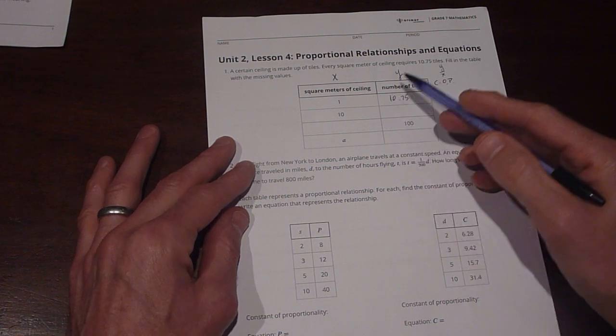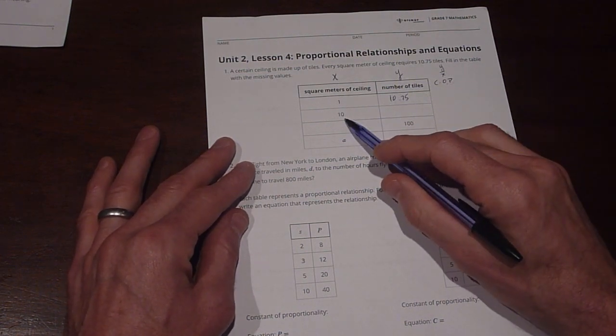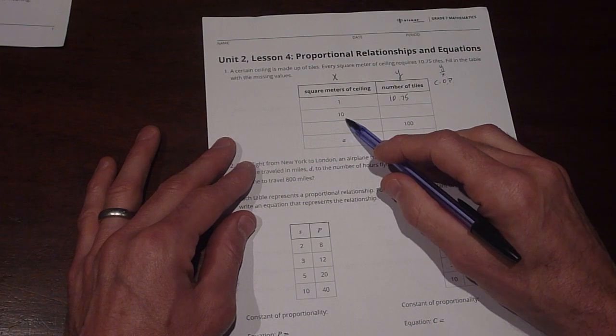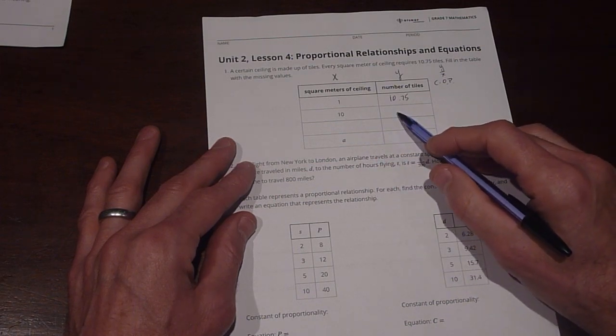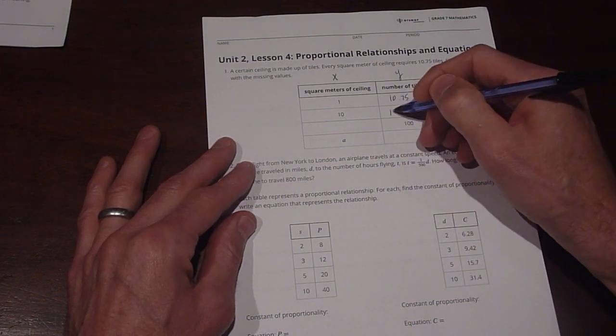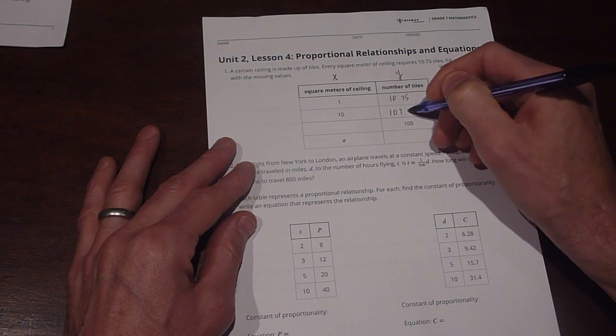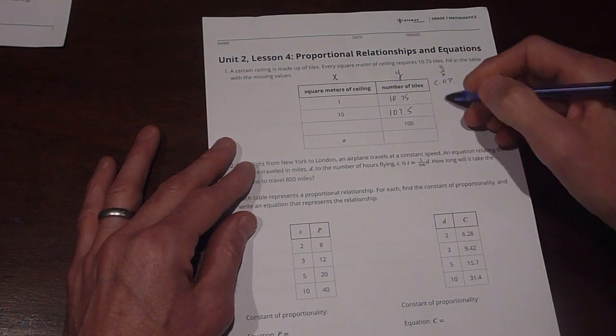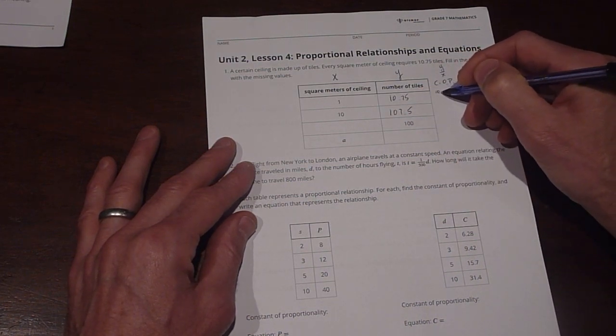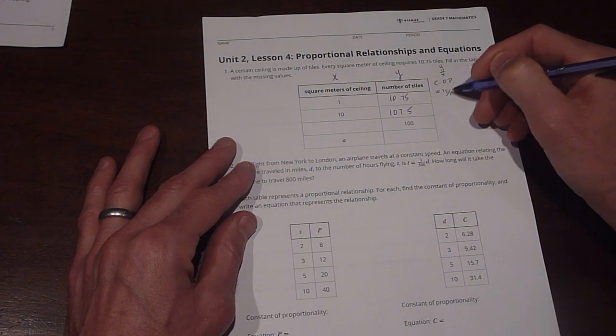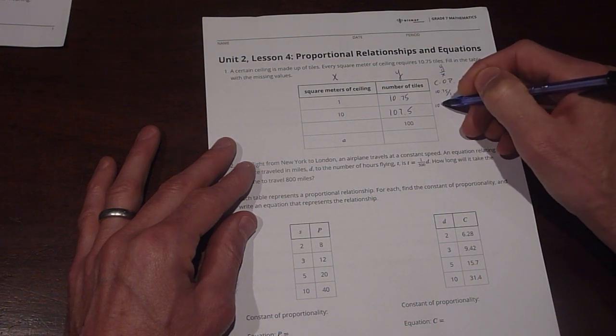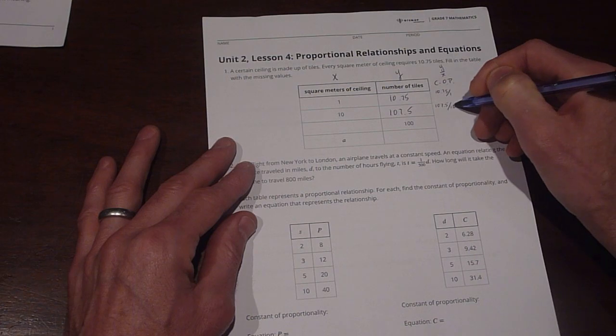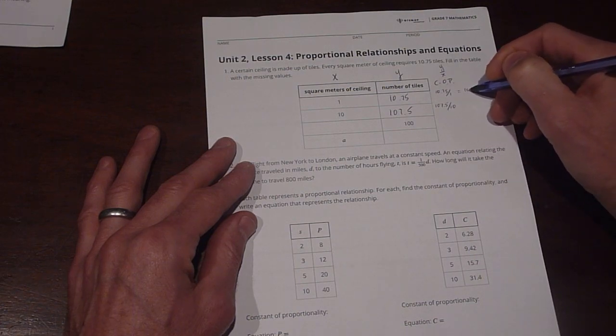Okay, so now how do we fill out the rest of the table? Well, this is 10 here, so it's times 10. So then it's going to be 10.75 times 10, which is going to be 107.5. So again, we see our constant of proportionality is 10.75 divided by 1. This is going to be 107.5 divided by 10. Now, both of those are going to equal 10.75.